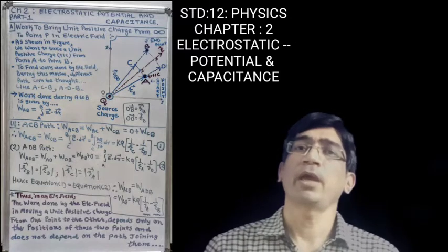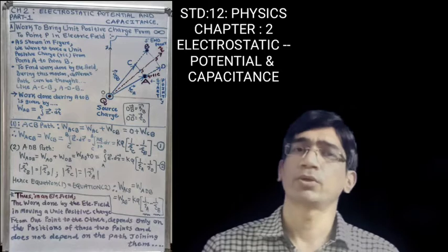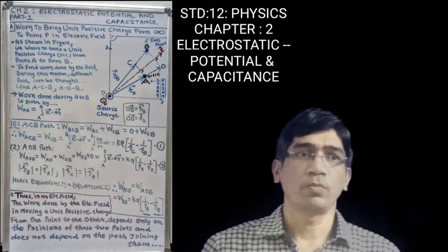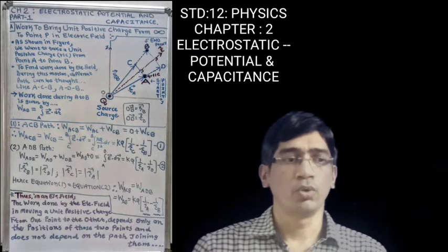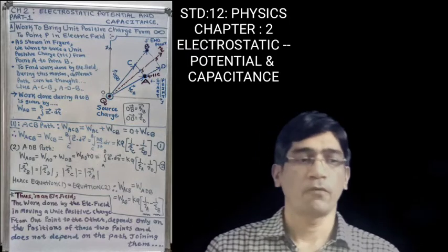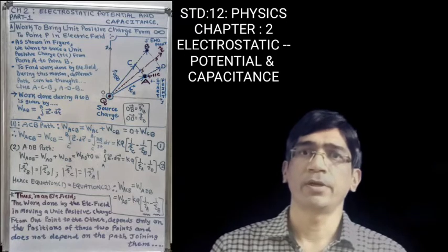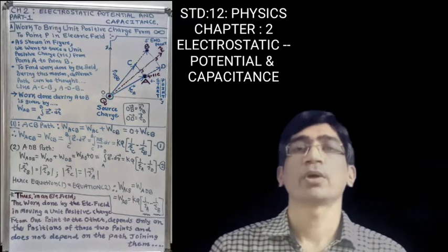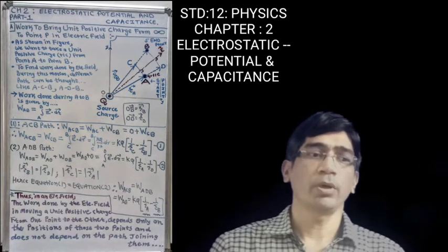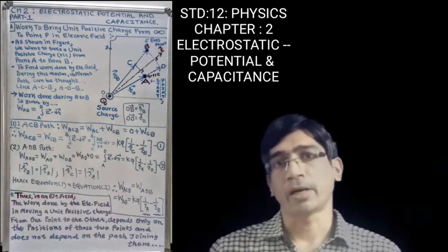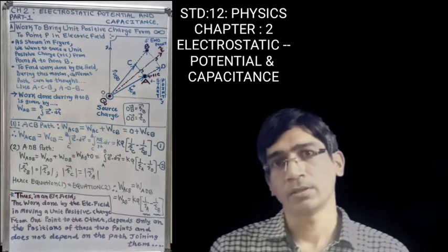In the same way, for the ADB path, the total work done is W_ADB = W_AD + W_DB = W_AD + 0. Because for W_DB, the work is 0 — here also the electric field and displacement are perpendicular to each other, as you can see in the diagram that WD is perpendicular to the electric field E. So W_ADB = ∫(A to D) E·dr = KQ(1/RA − 1/RD). This is the second equation.